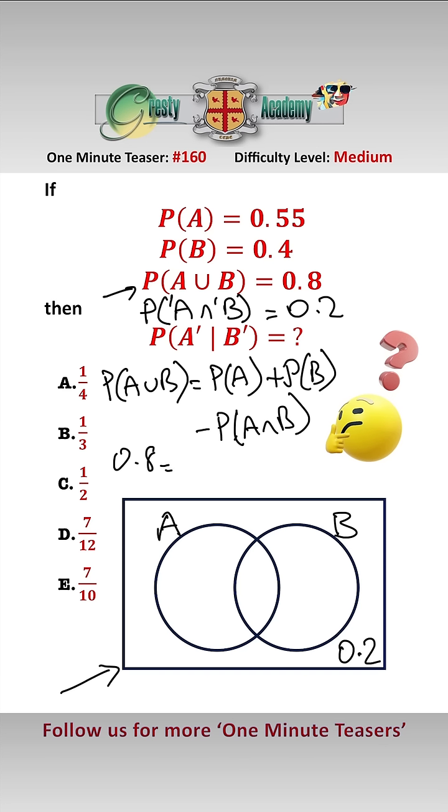This gives us that the probability of A and B is 0.15, which goes here. Therefore, given that the probability of A is 0.55, this bit is 0.4. And the probability of B is 0.4, so this bit is 0.25.